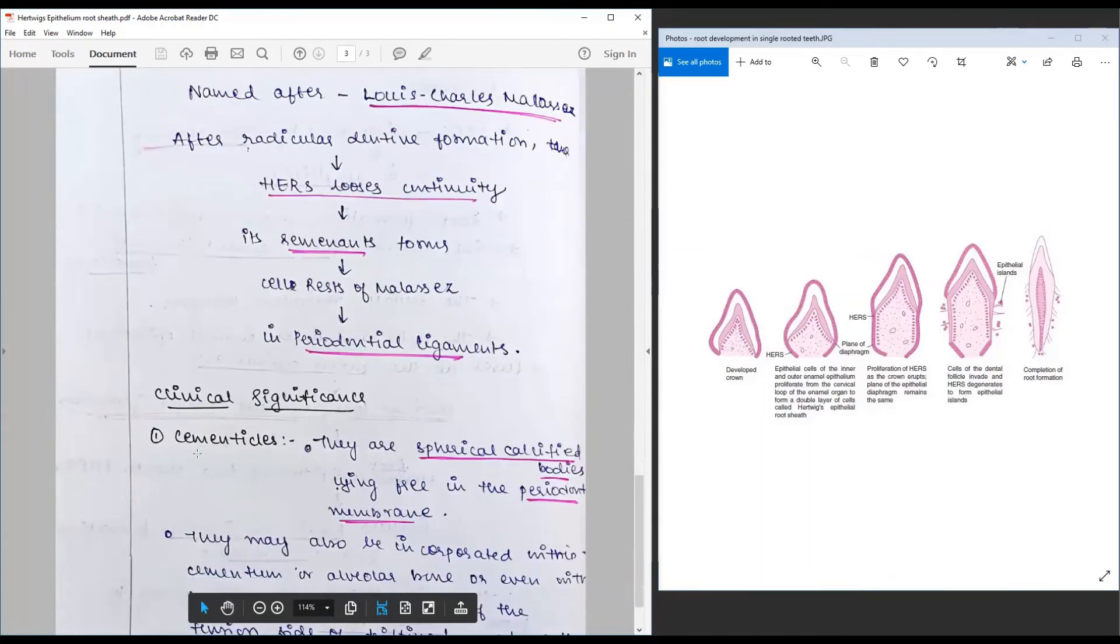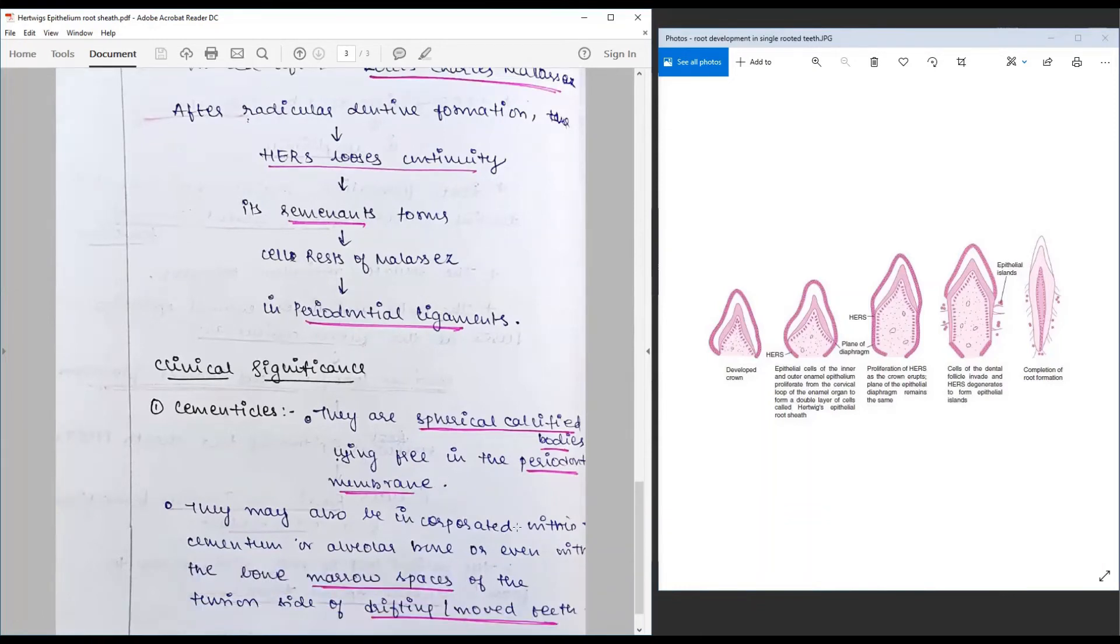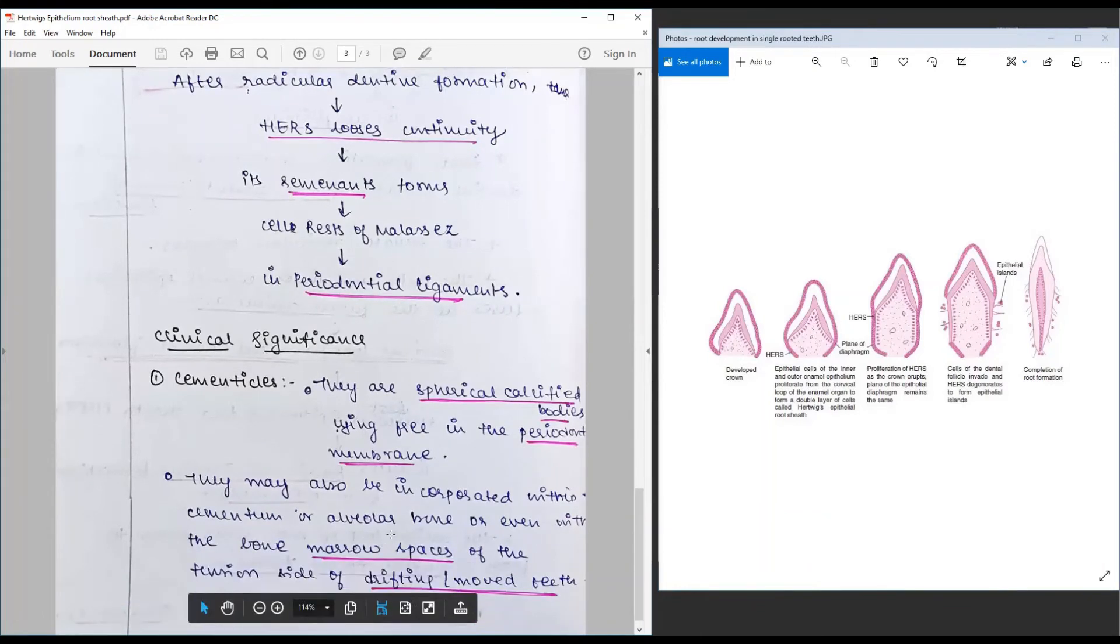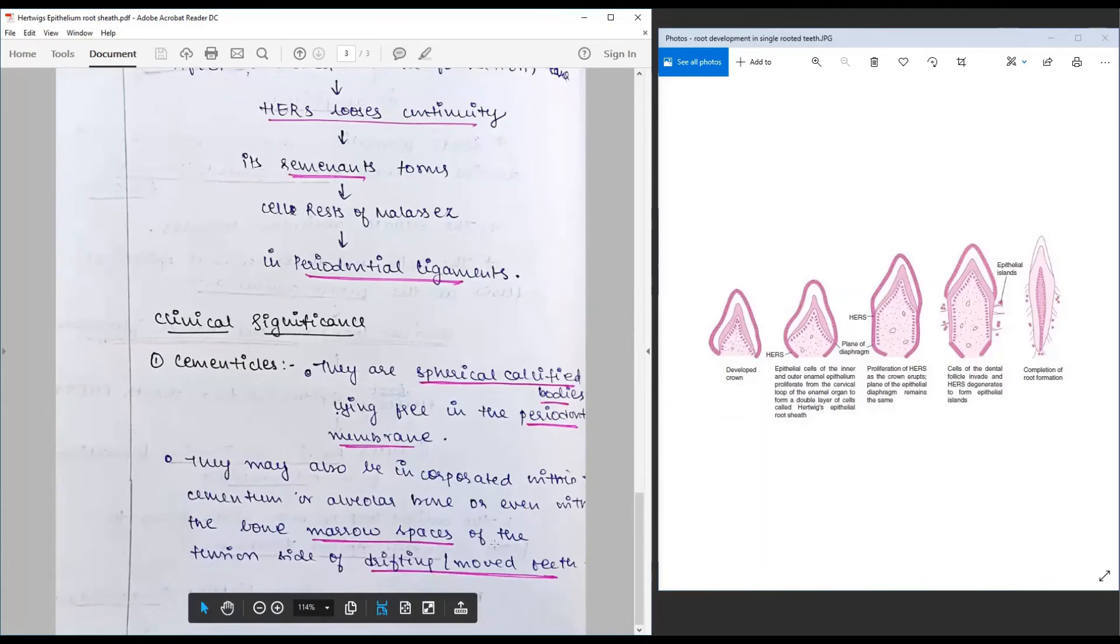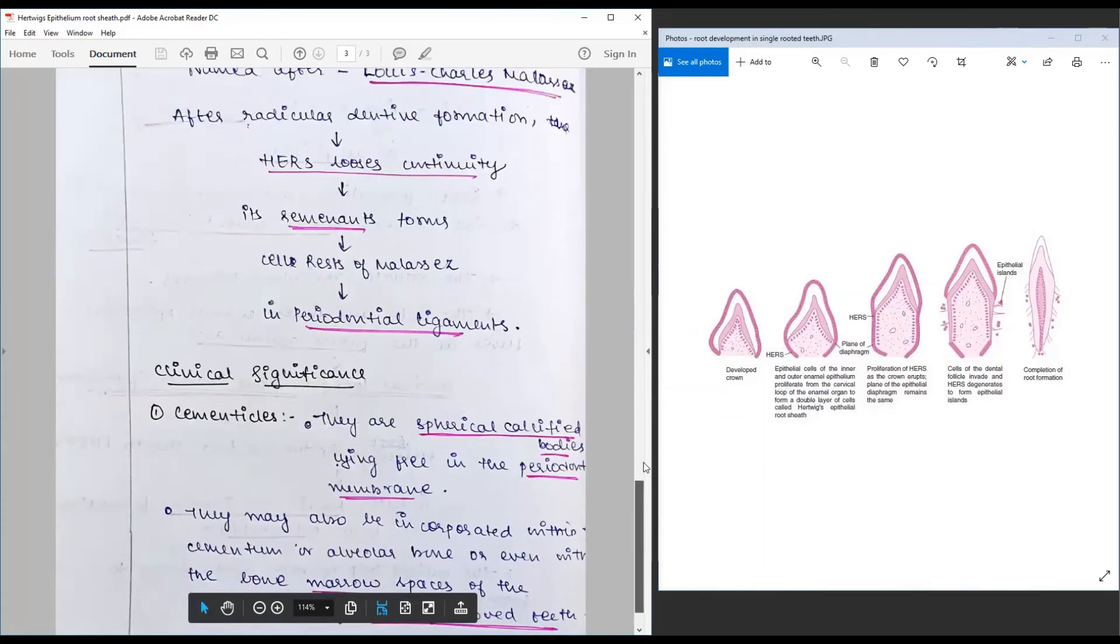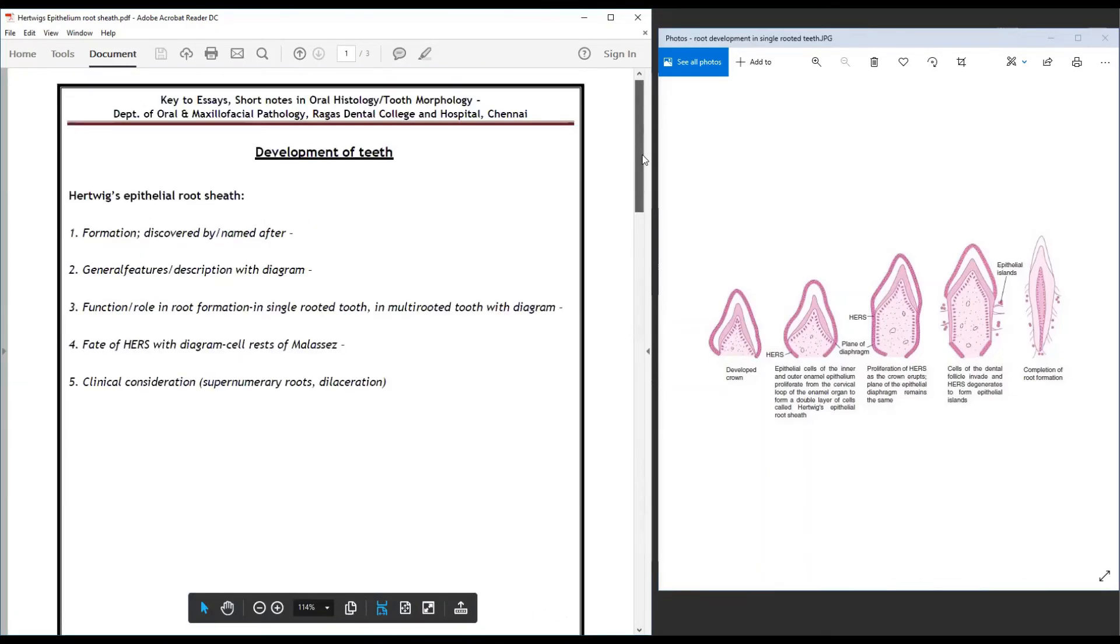Clinical significance: For this question, we have to talk about cementocles, which are calcified bodies present in the periodontal membranes. Can be incorporated along with cementum or alveolar bone or even bone marrow spaces. The other clinical significance of Hertwig's sheath is...